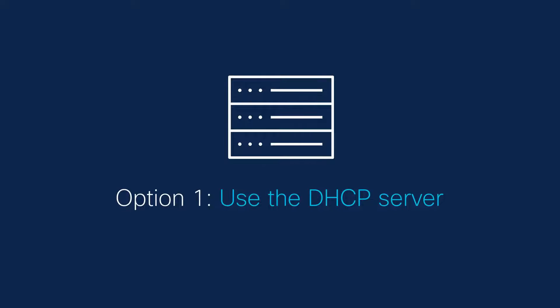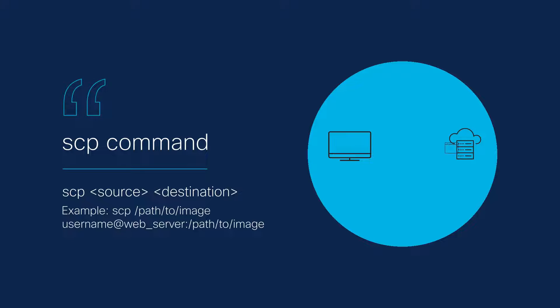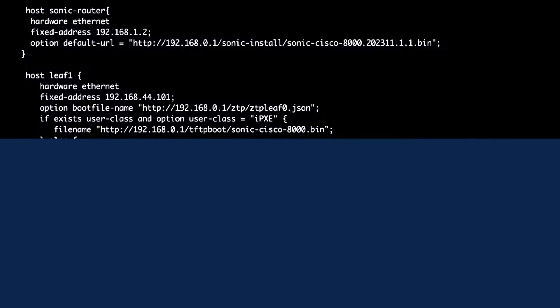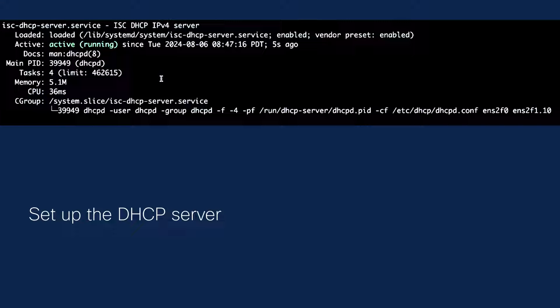Let's explore the first option using the DHCP method. Copy the downloaded SONiC image to a web server. You can use the SCP command to transfer the downloaded SONiC installation image to your web server. Alternatively, you can use a TFTP server to host the image. Next, ensure the details of the SONiC image are added to the DHCP server, and set up your DHCP server to host the SONiC installer image. This configuration will redirect to the location where the web server is hosting the SONiC boot image.